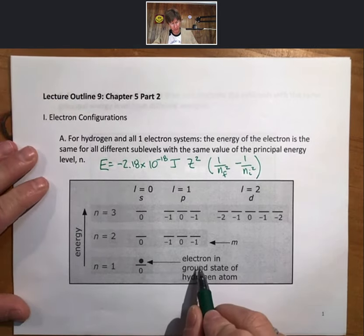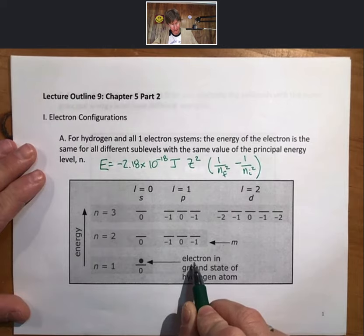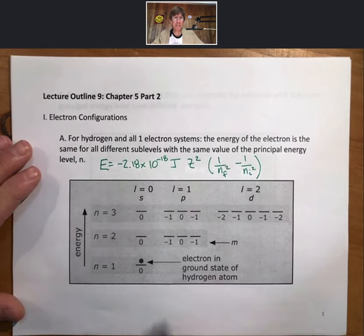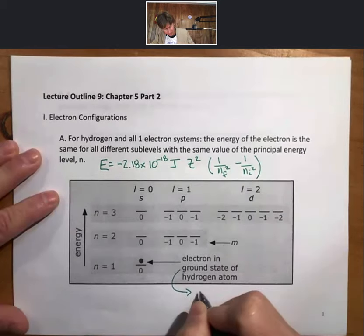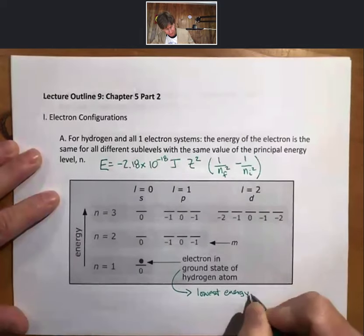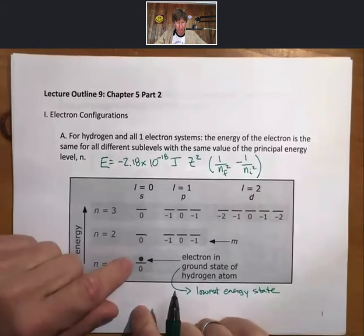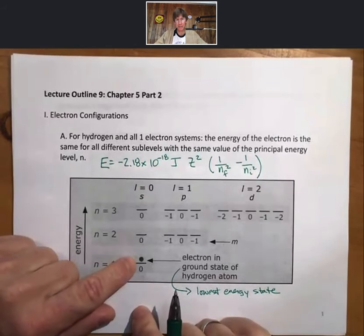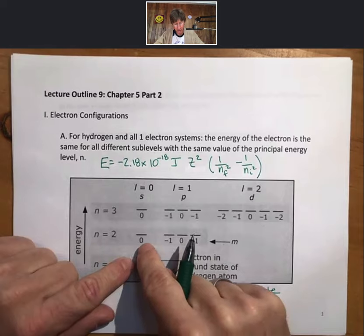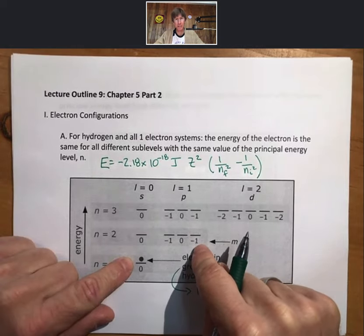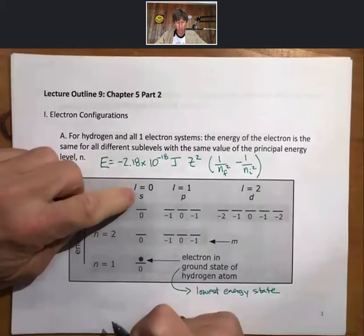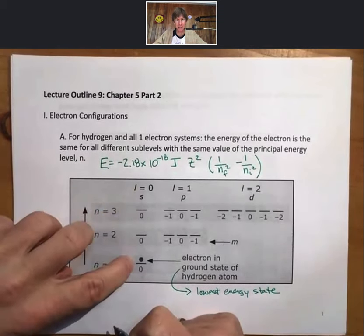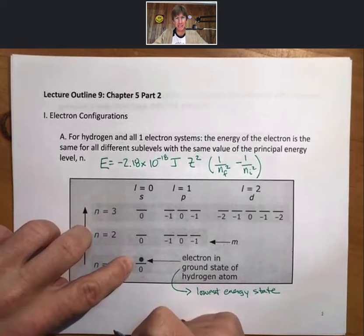Another thing I want to talk about here is an electron in the ground state. The ground state is going to be the lowest energy state. And we find one electron here. Now, these numbers for 0, minus 1, 0, and 1, those are actual quantum numbers. We are not dealing with quantum numbers. What we need to know about this is for S-sublevel, there is one line. Sometimes it will be a box. That is for one orbital.